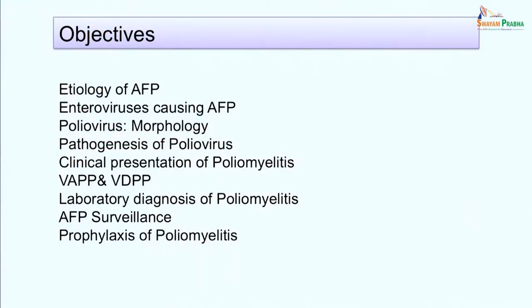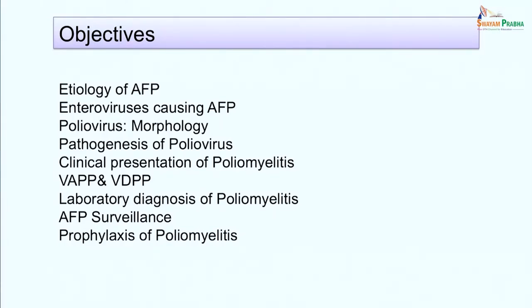The objectives for this session are: at the end of the session you will be able to describe the etiology of acute flaccid paralysis (AFP), enumerate enteroviruses causing AFP, describe the structure of poliomyelitis virus, pathogenesis of poliomyelitis, clinical presentation of poliomyelitis, vaccine associated paralytic poliomyelitis and vaccine derived paralytic poliomyelitis, laboratory diagnosis of poliomyelitis, AFP surveillance, and prophylaxis of poliomyelitis.